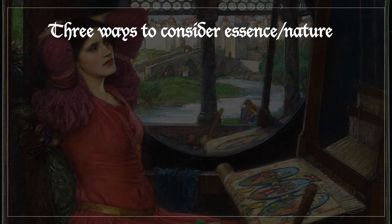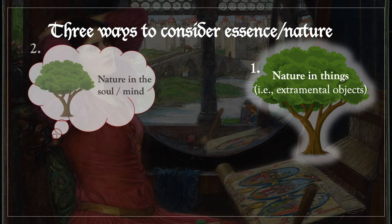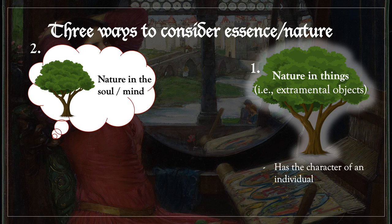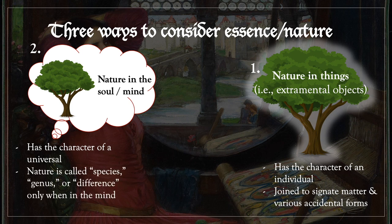From these two ways in which a nature may exist, there follow three ways in which a nature may be considered. The first way to consider a nature is in things, or extramental objects. The second way is to consider a nature as it is in the soul, or in the mind. In extramental objects, the nature is individuated, because it's joined to signate matter and various accidental forms. In the mind, however, the nature has the character not of an individual, but of a universal — because it's predicable of multiple individuals. Tree belongs to this tree, that tree, and some other tree. Since the nature in the mind is universal, it can be called a species, a genus, or a difference, depending on how determinate or indeterminate the concept is.